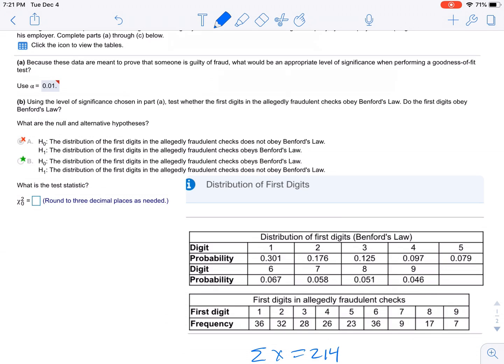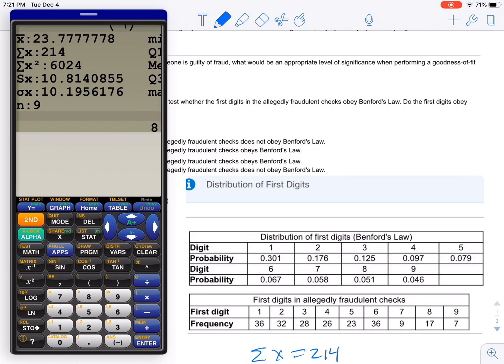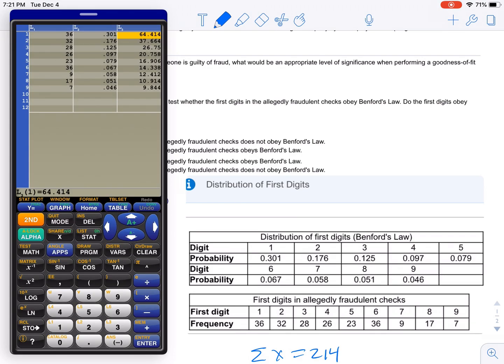All right, so we have our observed values. We want to see if they fall in line with Benford's Law. We could throw the observed values in L1, which I already did. If I go to edit L1, I have all my observed values.